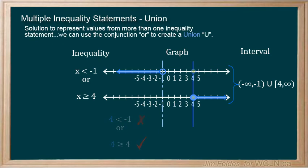Note that this relationship can't be written as a compound statement, as x cannot be both less than negative 1 and greater than or equal to 4 at the same time.